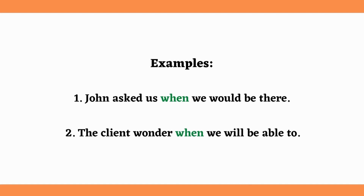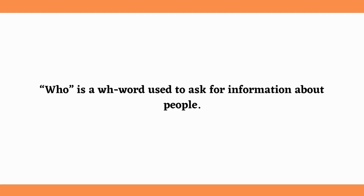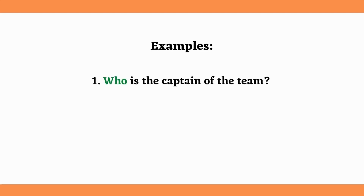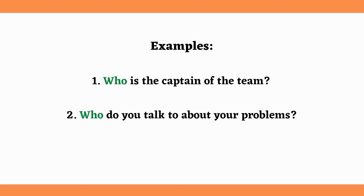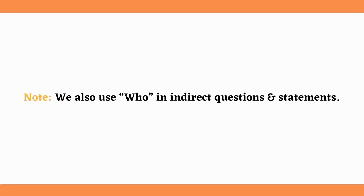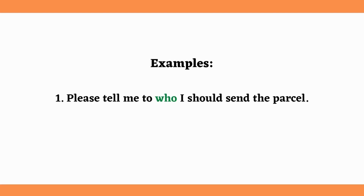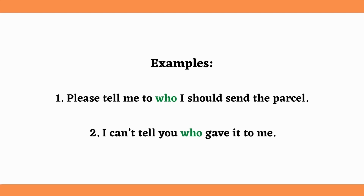Our fourth WH word is 'Who.' 'Who' is a WH word used to ask for information about people. For example: Who is the captain of the team? Who do you talk to about your problems? Who helps you most? We also use 'who' in indirect questions and statements. For example: Please tell me to who I should send the parcel. I can't tell you who gave it to me.